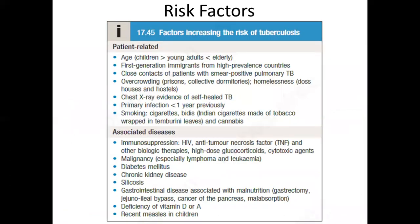Moving to risk factors: certain patient-related and disease-associated risk factors increase the risk of tuberculosis. Patient-related risk factors include extremes of age such as children or elderly patients, cigarette smoking, being a first-generation immigrant from a high-prevalence country, or having associated diseases like HIV, asthma, chronic kidney disease, silicosis, or various other immunocompromising conditions.